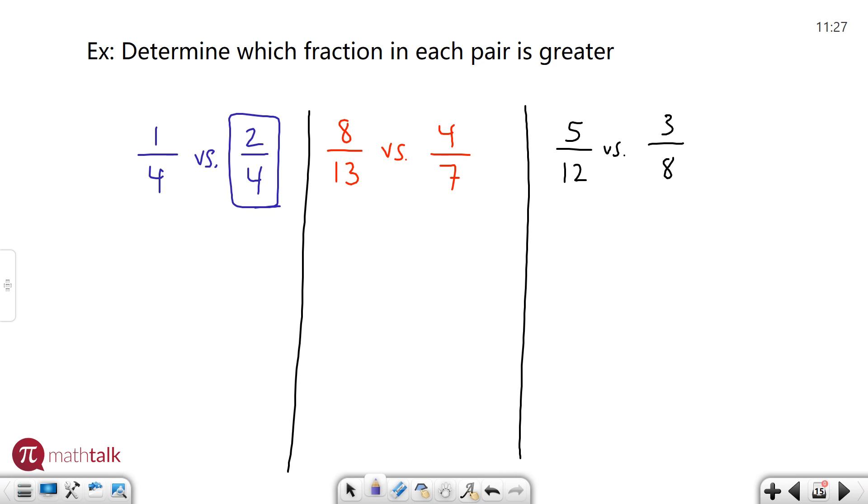My next example I have eight-thirteenths versus four-sevenths. Those are really uncommon fractions. Typically one of the ways you can do is find a common denominator and then find the numerator that makes it equivalent fractions and compare them. But that's a lot of work. Here's a little trick to help you with comparing the value of fractions. You can do what's called cross multiplying.